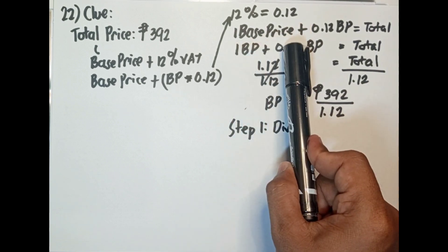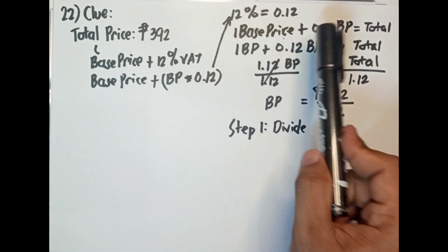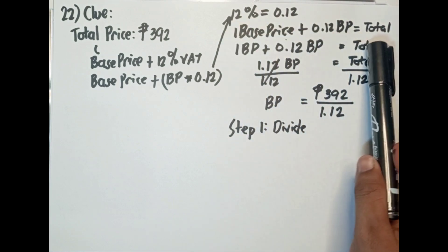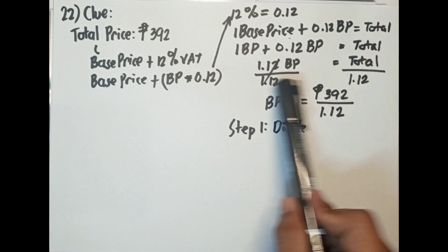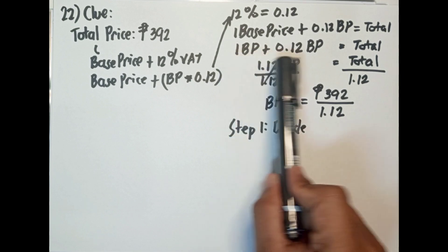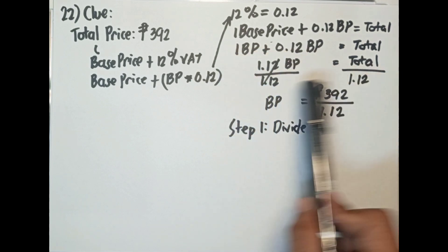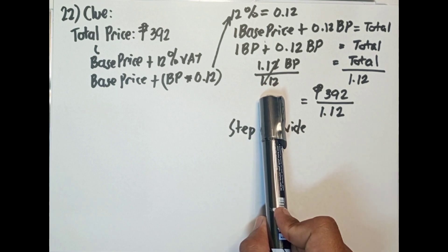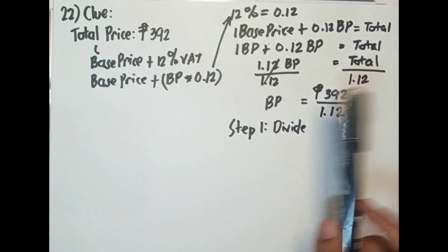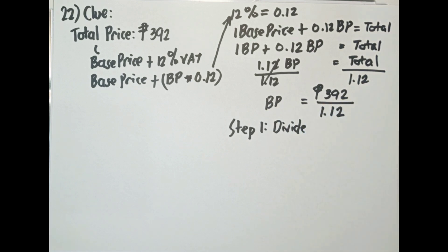Ang ating one base price, kasi whole number, yung base price buo siya, plus 0.12 na base price, yun yung total price. So 1 BP plus 0.12 BP equals total. 1 plus 0.12 is 1.12 BP equals total. Divide both sides by 1.12. So base price equals, para makuha natin ang base price, dapat natin i-divide ang 392 pesos sa 1.12.